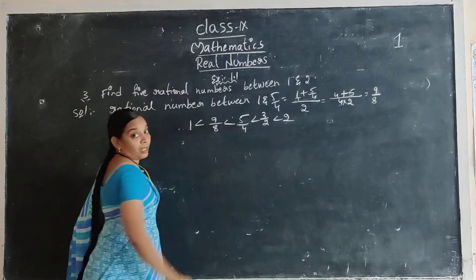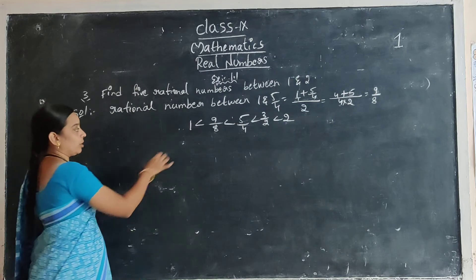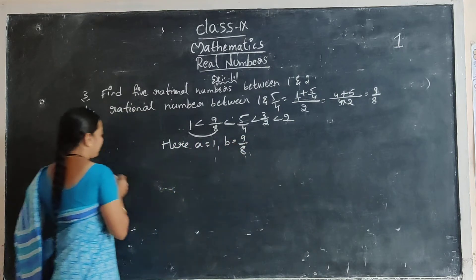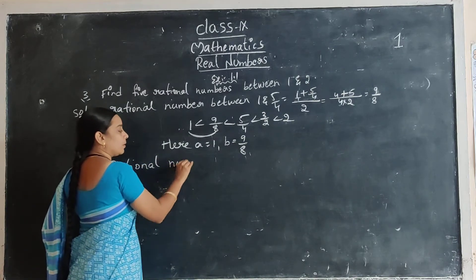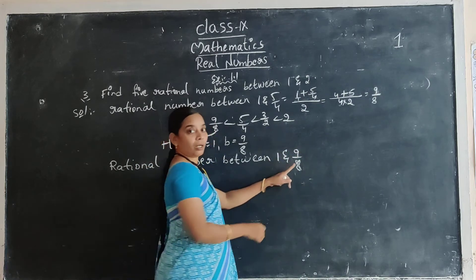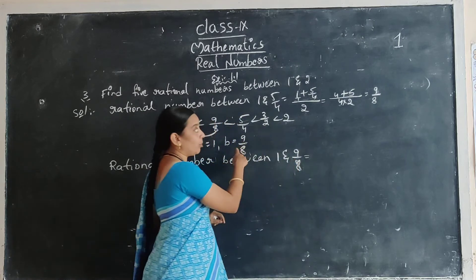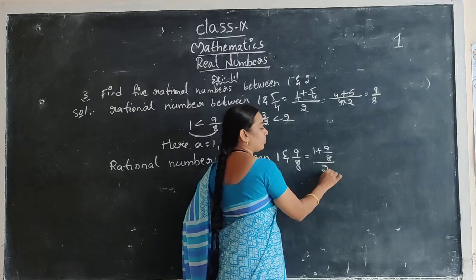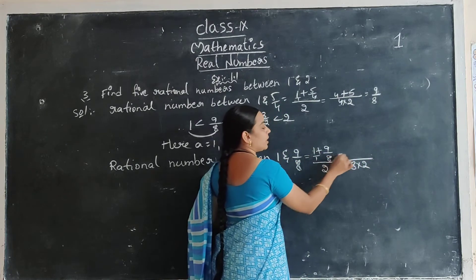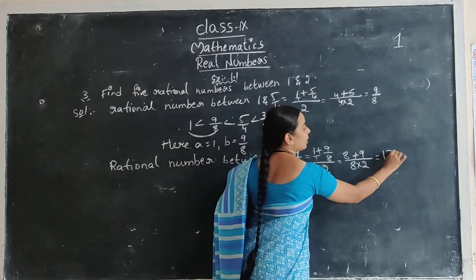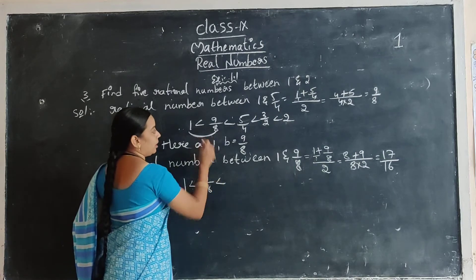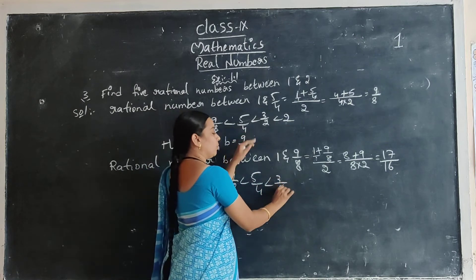Already got 3 rational numbers. We want 5 rational numbers, so find 2 more. In between these two we want to find 1 more. Here A value is 1 and B value is 9 by 8. Again find a rational number between 1 and 9 by 8. 4th value is A plus B by 2: 1 plus 9 by 8 by 2. Denominator is 1, so 1 and 8 LCM is 8, and 2 is also denominator. 1 eights are 8, 1 nines are 9. Add both: 17. 2 eights are 16. You got one more rational number: 17 by 16. So: 1 less than 17 by 16 less than 9 by 8 less than 5 by 4 less than 3 by 2 less than 2.